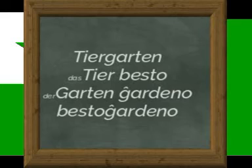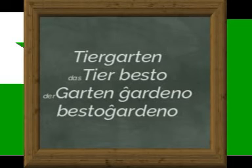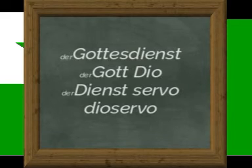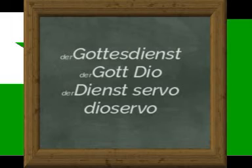Biergarten — biestjardeno. The answers? Pie — biesto. And garden — jardeno. They use the word ZOO in English. The word GOT — DIO, and DINST — SERVO.